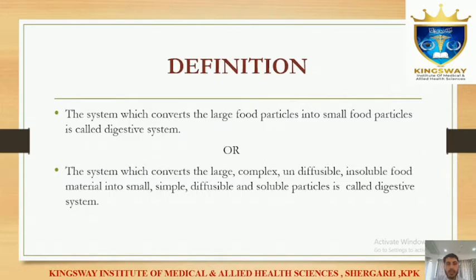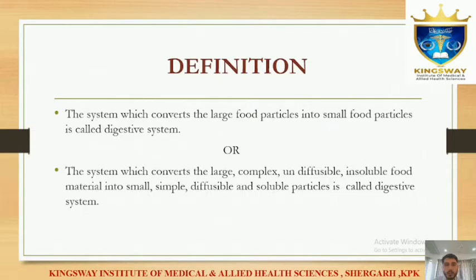How can we define the digestive system? The system which converts large food particles into small food particles is called the digestive system. Or more completely: the system which converts large, complex, undiffusible, insoluble food materials into small, simple, diffusible, and soluble particles is called the digestive system.